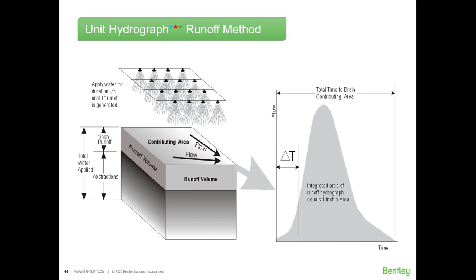Another runoff method is the unit hydrograph method. The basic principle is that a unit hydrograph represents the time versus discharge relationship resulting from one unit — whether an inch or centimeter — of rainfall excess occurring over a watershed for a specified duration. For that one inch of precipitation, we know what the runoff hydrograph looks like, and this becomes a pattern or template to compute runoff from any other rainfall excess value.